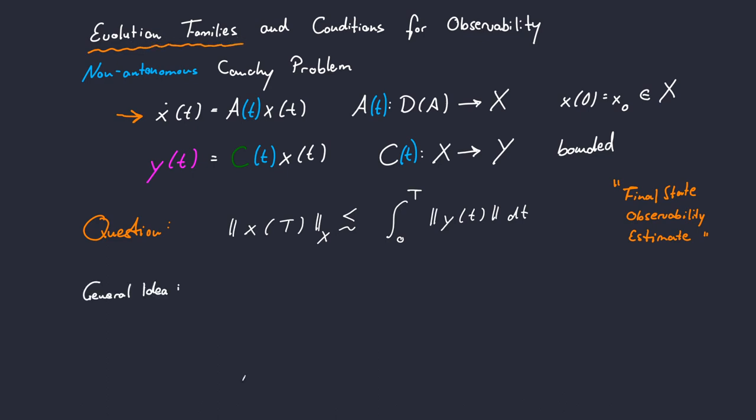The general idea behind an evolution family is to define a solution to the non-autonomous Cauchy problem by means of an operator family that we will call capital U. This family takes two parameters, one parameter t that corresponds to the time at which we are interested in the solution, and the second parameter, which I set now to 0, because we want to map our initial value x_0